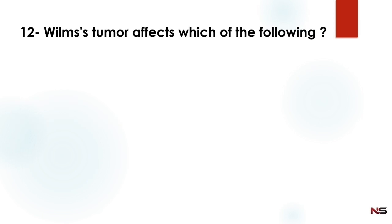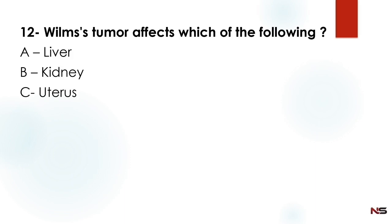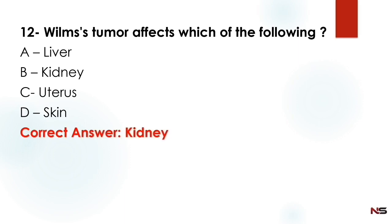Next question: Wilms tumor affects which of the following? Option A: liver. Option B: kidney. Option C: uterus. Option D: skin. The correct answer is kidney. Wilms tumor affects the kidney.